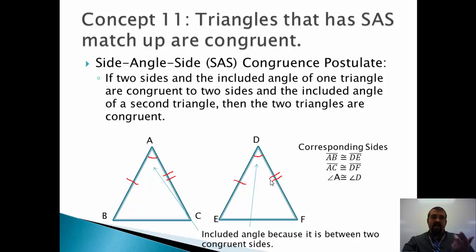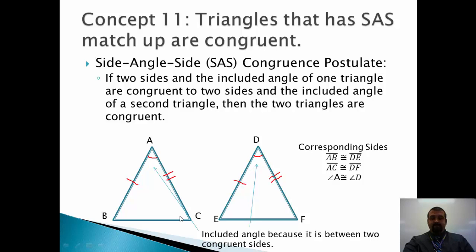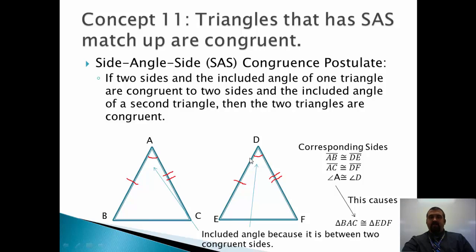I just have to be a little careful about order. The angle goes Side, Angle, Side in the actual triangle — if it goes Side, Side, Angle I would not be fine. So this causes triangle BAC to be congruent to triangle EDF. The reason I went in that order is because segment BA and segment ED are congruent, so I started with those two, then segment AC and segment DF are congruent, so I ended with those.